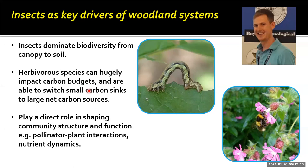Insects are absolutely fundamental to woodland systems. They dominate biodiversity in terrestrial and freshwater habitats, and in woodland systems they are by far the most biodiverse group — right from the soil all the way up to the canopy. Herbivorous species are hugely important and can have a direct impact on carbon budgets. There are a number of examples where big insect infestations can change forest systems from carbon sinks to net carbon sources, because insect pests killing large numbers of trees stop photosynthesis while the decay process releases carbon.